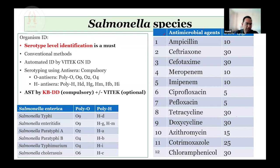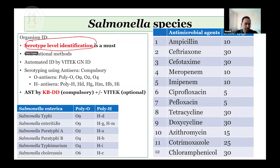Coming to Salmonella species, organism identification can be done manually or using Vitek. What is mandatory is serotype-level identification using antisera. Both conventional and Vitek ID are acceptable. Serotyping is done by standard protocol using O and H antisera. The table below shows details of how it can be done. Salmonella enterica poly-O and poly-H are very useful in identifying the group, and serotyping can be done using specific O and H antisera.